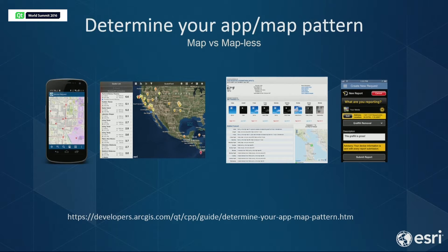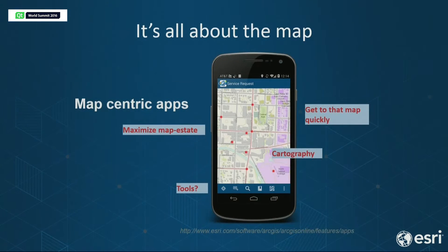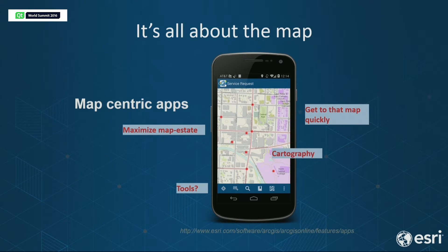Location is important, but how do you integrate it into your apps? The first approach is a map-centric type of app — a good example everyone uses is something like Google Maps or Apple Maps, where you interact with the application primarily through the map. Most of the real estate is dedicated to the map with high-quality cartography and simple tools. An example is Esri's Collector for ArcGIS, where field workers like utility workers can navigate to manholes, tap the map to fill out servicing information, sync it back to the cloud, and move on to the next one.